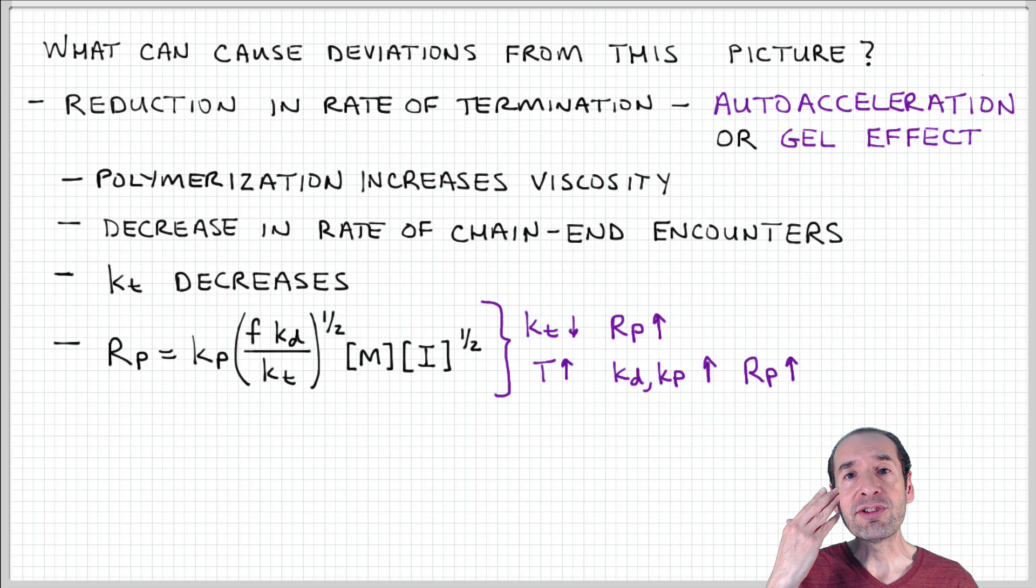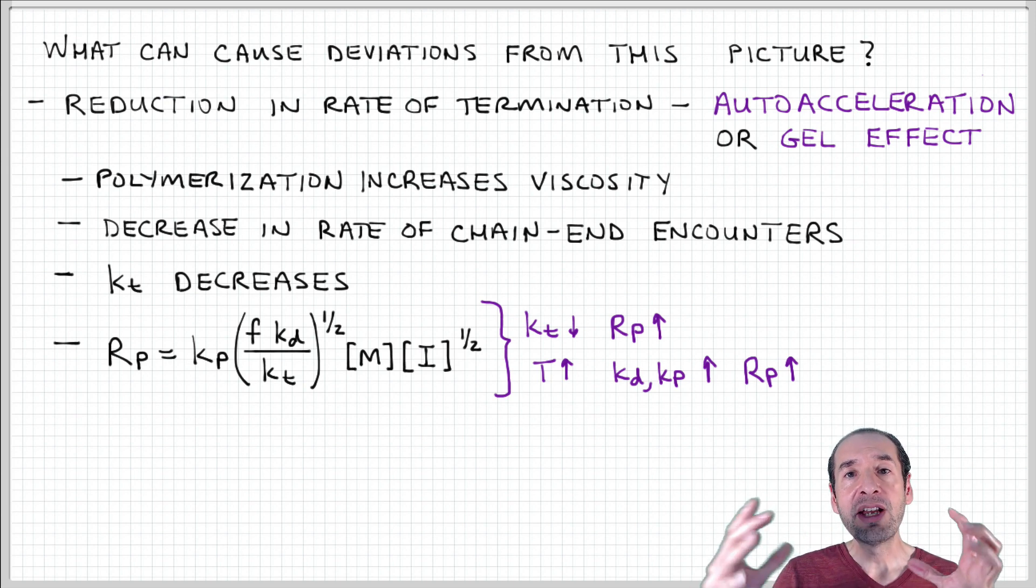It is easier to think about in terms of combination termination because you need chain ends of two very large polymers to find each other and combine in order to terminate the polymerization process. So as the chains get longer, they sort of lose their ability to diffuse and probe states that would lead to encounters with other chain ends.